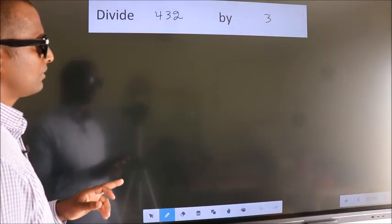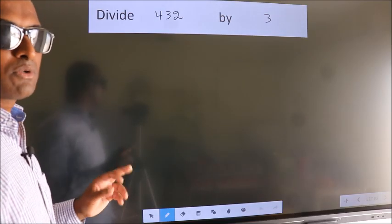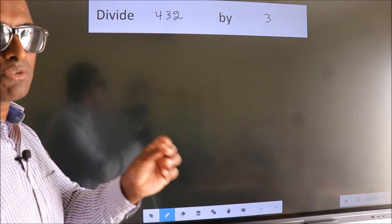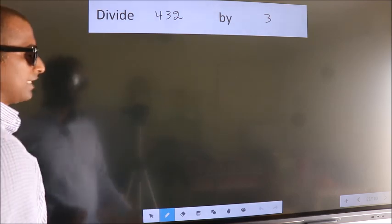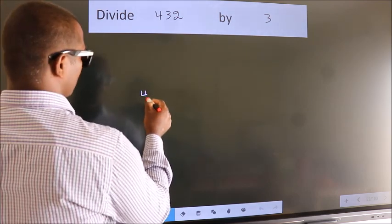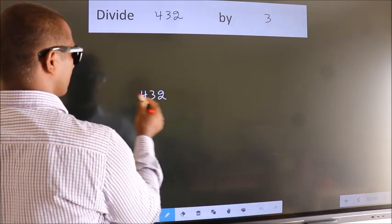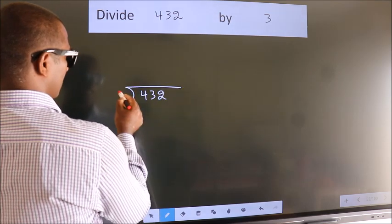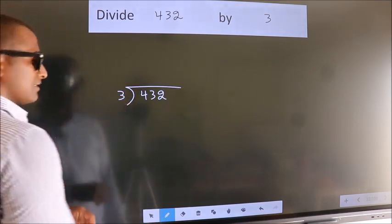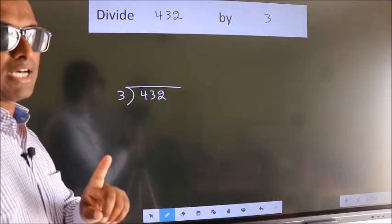Divide 432 by 3. To do this division, we should frame it in this way. 432 here, 3 here. This is your step 1.